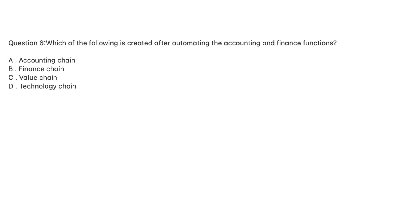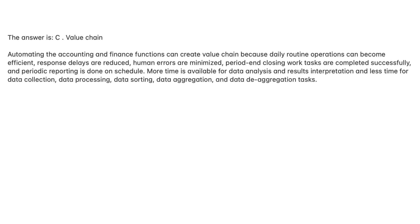Question 6. Which of the following is created after automating the accounting and finance functions? A. Accounting chain. B. Finance chain. C. Value chain. D. Technology chain. The answer is C, value chain. Automating the accounting and finance functions can create value chain because daily routine operations can become efficient, response delays are reduced, human errors are minimized, period and closing work tasks are completed successfully, and periodic reporting is done on schedule. More time is available for data analysis and results interpretation, and less time for data collection, processing, sorting, aggregation, and de-aggregation tasks.